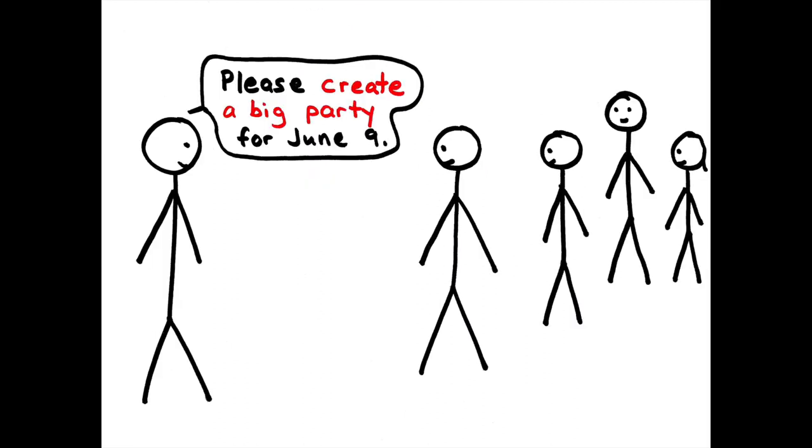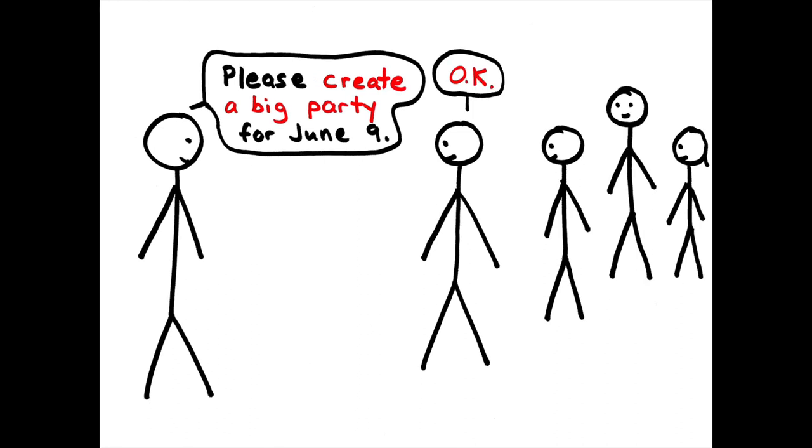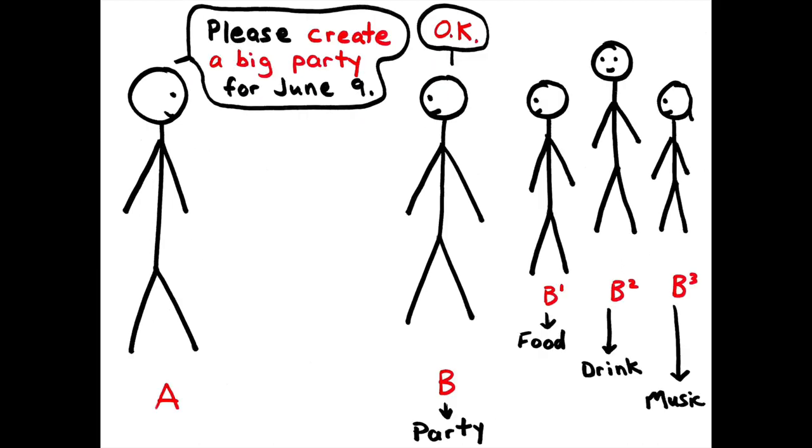Now, let's say person B has staff, and A asks B to please organize and hold a big party. Person B then might assign different tasks to many different individuals, with each person being responsible for completing those tasks, while person B is accountable for making the whole party happen.